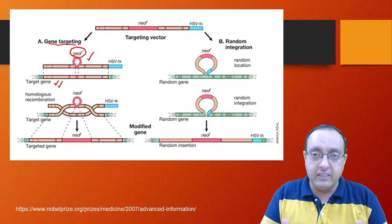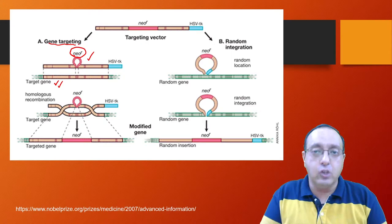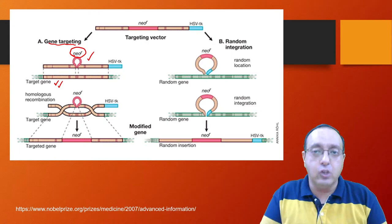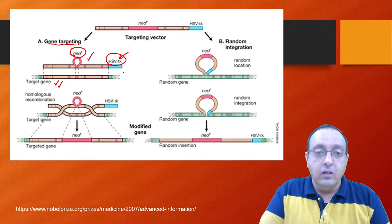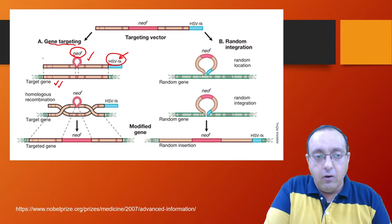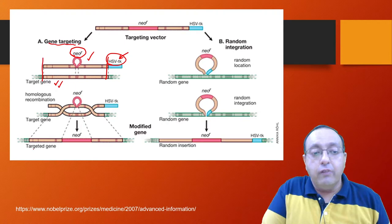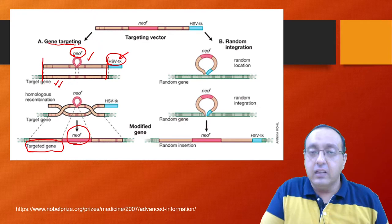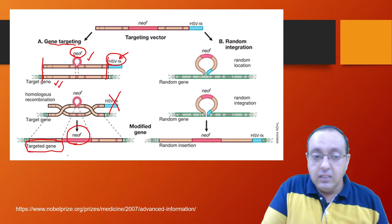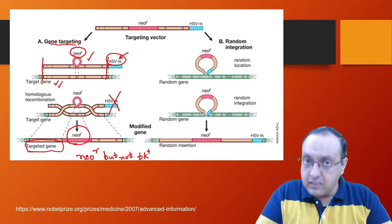This confers resistance to neomycin. So if we use neomycin in the selection medium, we can select cells which have neomycin resistance and also the thymidine kinase encoded by this virus HSV. So HSV will not get integrated—only the homologous region plus the neomycin resistance gene will get incorporated. So the final transgenic cell will have the insertion in the target gene and it will contain the neomycin resistance, but it will not contain the thymidine kinase. So it will be neomycin resistant but it will not have thymidine kinase.